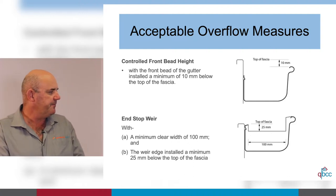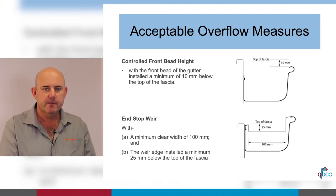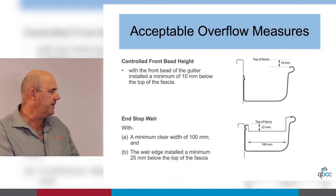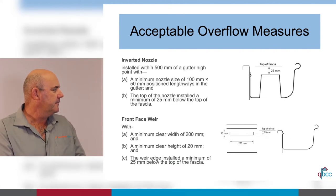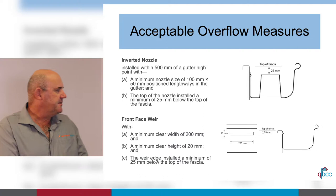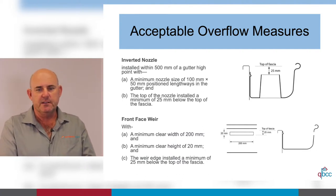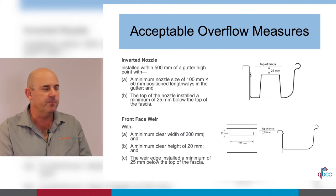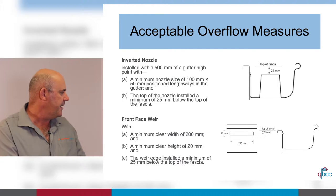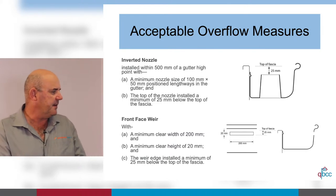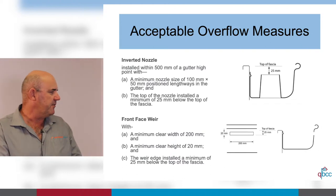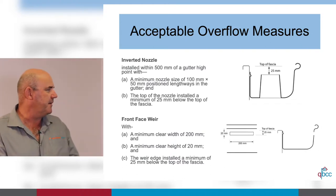The end stop wear is normally used post-fitting on a job that has issues — it's a method that can be easily fitted later. There's also the inverted nozzle; it's in the code but I wouldn't recommend it. It just gathers debris and leaves around the nozzle, and once that build-up happens it retains moisture. The front face wear also requires post-fitting and can't be done very aesthetically, so I wouldn't recommend that one either.